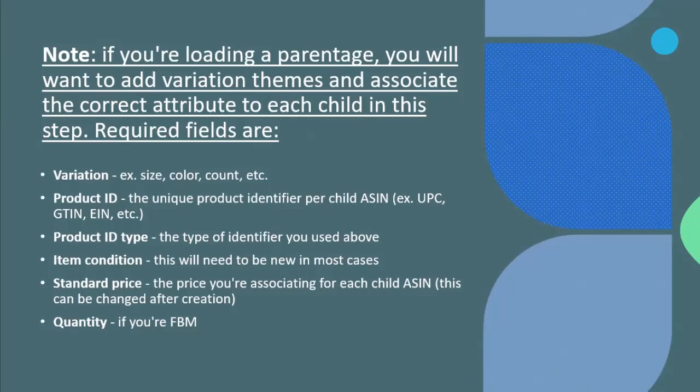For each child product, you enter the type, condition, and standard price. The variation defines the price difference - for example, a t-shirt in black or white color where the product is the same but the color differs. The child also has quantity, which applies if you are doing FBM - Fulfillment by Merchant.